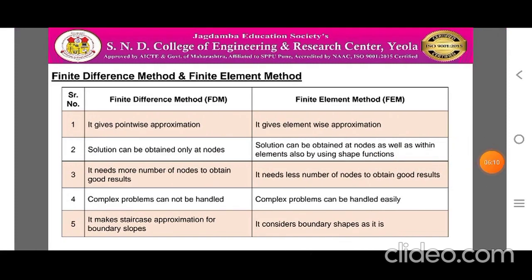Now, the comparison between Finite Difference Method and Finite Element Method. Point one: Finite Difference Method gives a point-wise approximate solution to the problem, while Finite Element Method gives an element-wise approximate solution. Point two: Finite Difference Method uses the solution only at nodes, while Finite Element Method uses the solution at nodes as well as within the element by using shape functions.